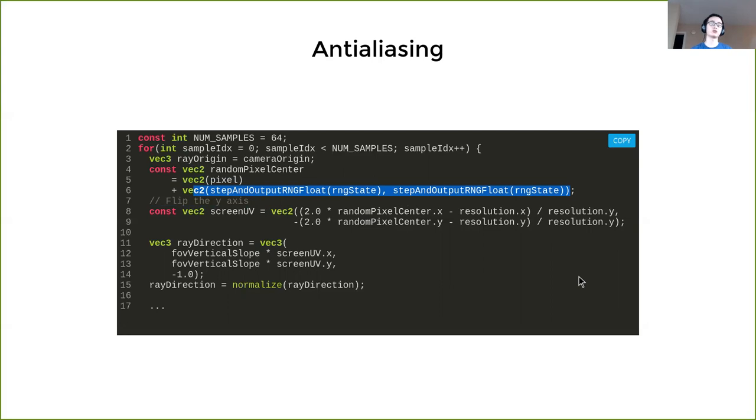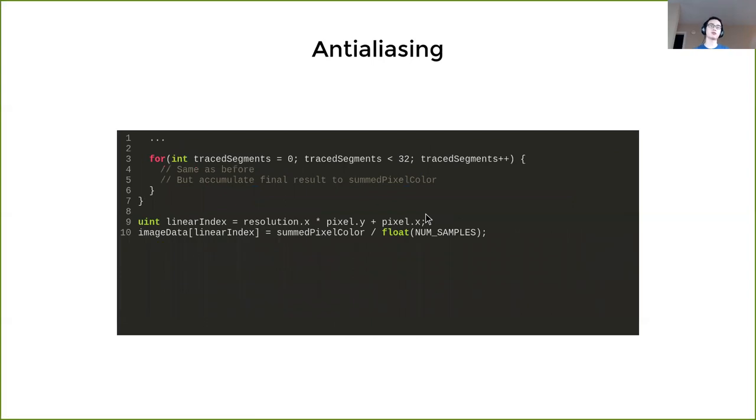Then using that information, we can generate a ray for that sample using the code we had before to accumulate the final result into our sum pixel color variable. And then at the end we just divide the sum pixel color by our sample size.